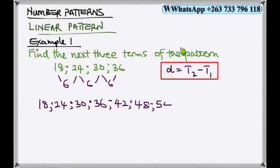The next three terms will add 6 each time. So 36 plus 6 is 42, plus 6 is 48, plus 6 is 54. These are the next three terms of the pattern.